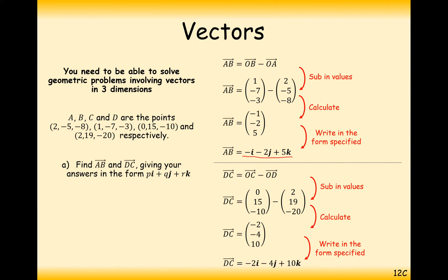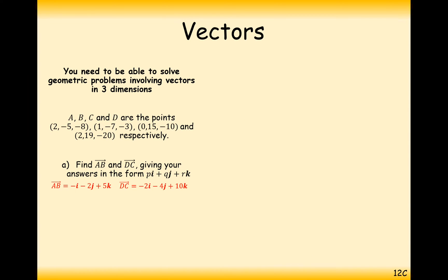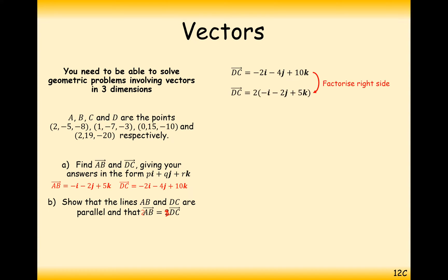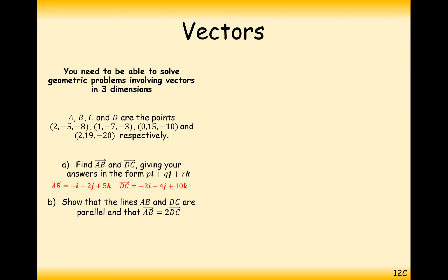I've immediately identified that this is parallel to the first one. Part b shows that lines AB and DC are parallel, and that DC is equal to 2 times AB. So if we factorise out two lots on the DC vector, we get the AB vector. Therefore DC equals 2 lots of AB, meaning the vectors are going in the same direction — one is just going twice as far as the other, hence they're parallel. You may need to write a sentence regarding that.